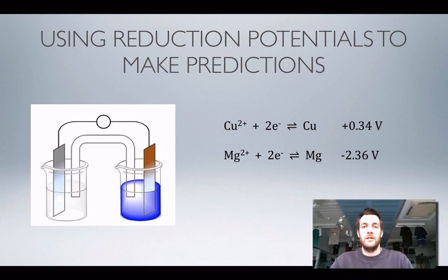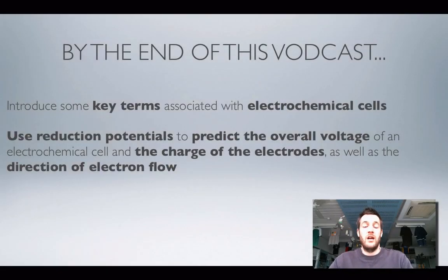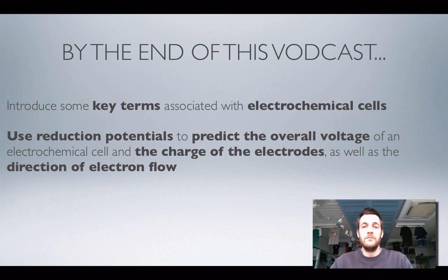That covers the principles of electrochemical cells. There are a huge number of different possibilities for electrochemical cells, but using the principles covered in this film you should be able to predict all these things for a large range of different cells. The next film covers some commercial examples of cells made of different half cells, so please comment, ask questions, and try not to move on before you've fully understood things.